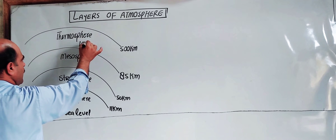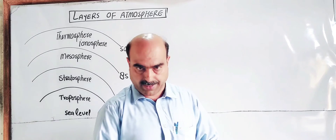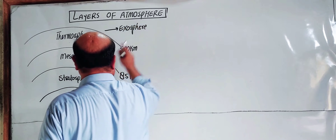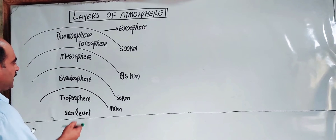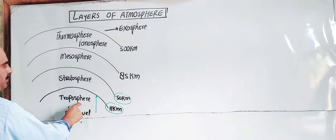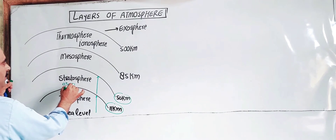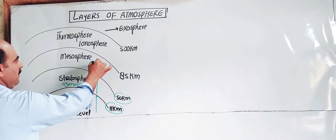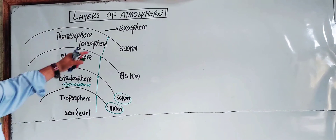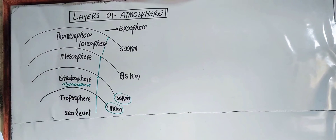The Ionosphere is also known as the ionosphere because particles exist in ionic form there. Beyond that is the Exosphere. So in summary: Troposphere up to 11 km, Stratosphere up to 50 km with the ozone sphere, Mesosphere up to 85 km, Thermosphere up to 500 km, and then the Exosphere.